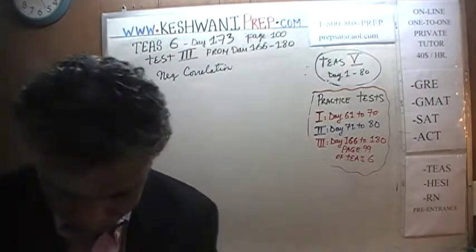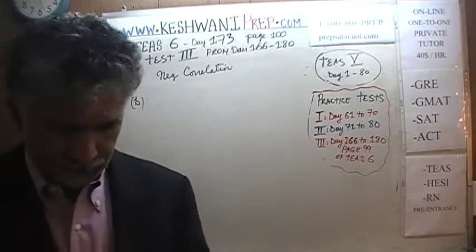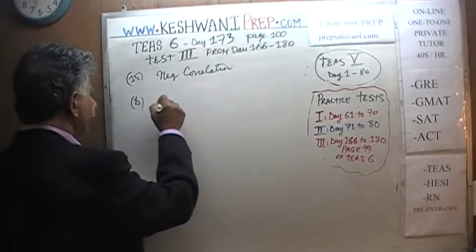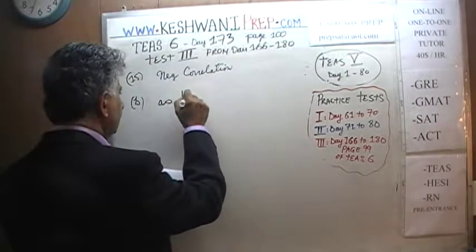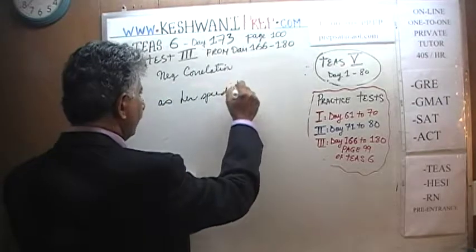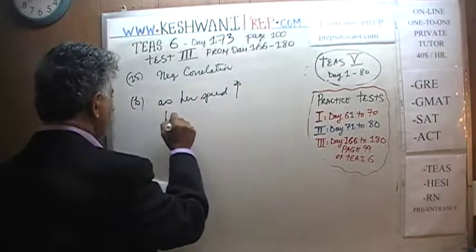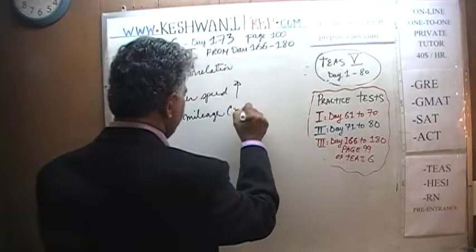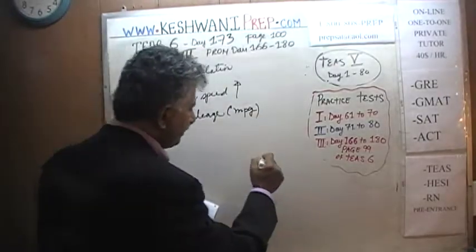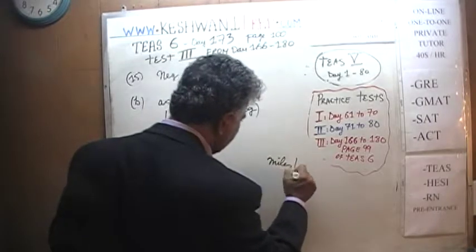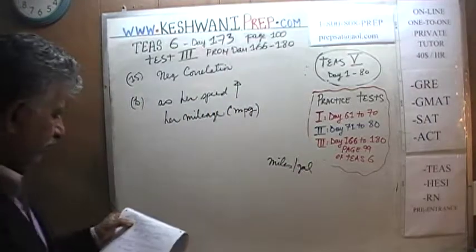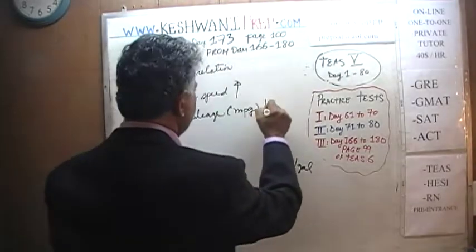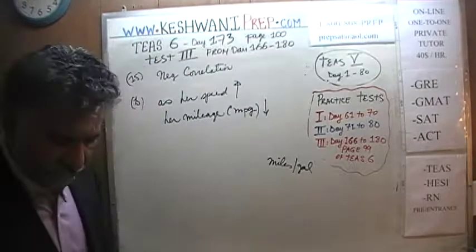Let's take a look at answer choice B. It says: as her speed goes up, her mileage — measured in miles per gallon, MPG, how many miles you get for each gallon of gasoline — goes down. There you go. They are moving in the opposite direction.